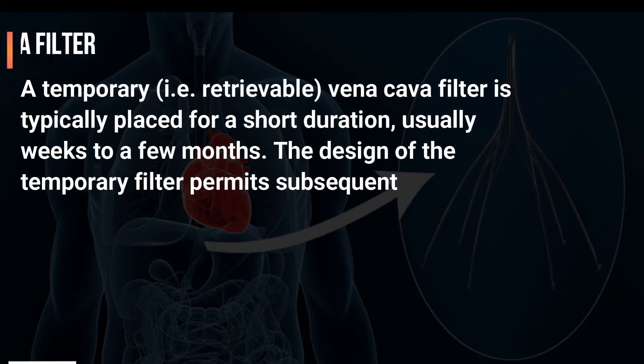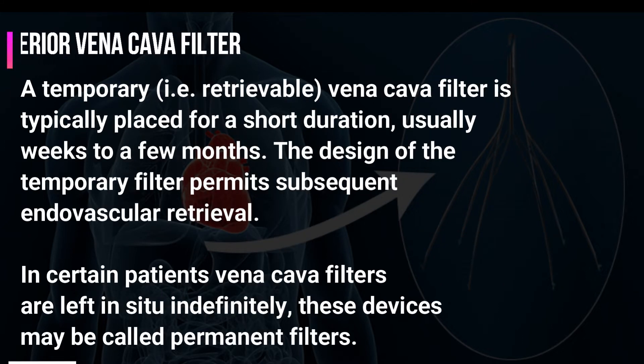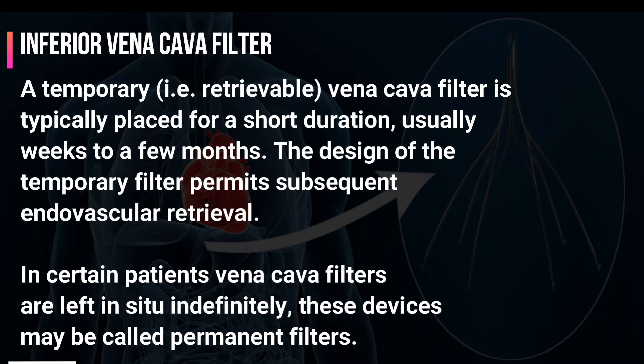A temporary, that is retrievable, vena cava filter is typically placed for a short duration, usually weeks to a few months. The design of the temporary filter permits subsequent endovascular retrieval. In certain patients, vena cava filters are left in situ indefinitely; these devices may be called permanent filters.